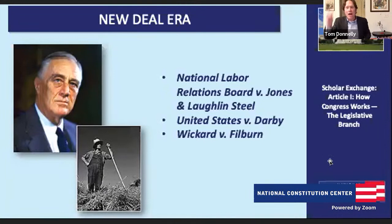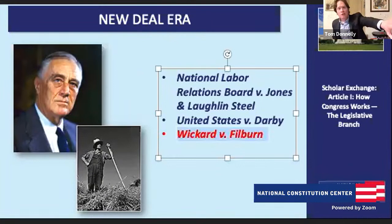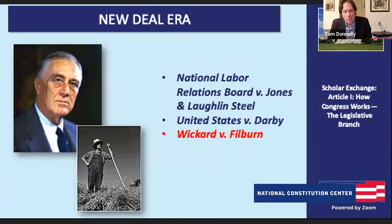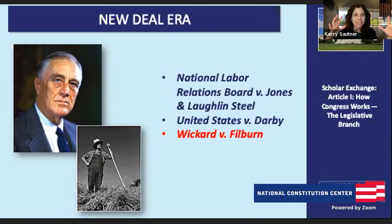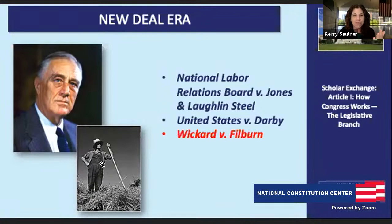We see in the New Deal Congress doing more and more, and the Supreme Court initially fighting back — saying Congress, you're doing too much, writing laws too sloppily, coming into areas traditionally associated with the states like wage laws, hours laws, and worker safety laws. But then we see what many constitutional scholars call a constitutional revolution: the New Deal revolution of 1937, where the Supreme Court shifted dramatically, rejecting the Lochner era and beginning to read Congress's power under the Commerce Clause and the Necessary and Proper Clause very broadly.